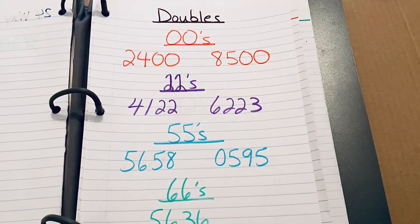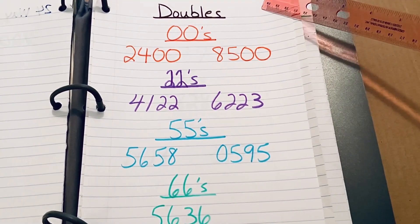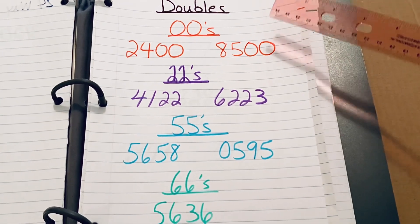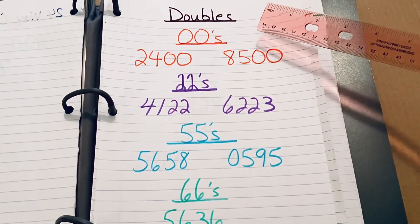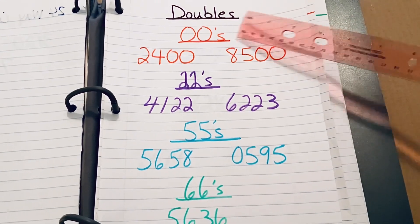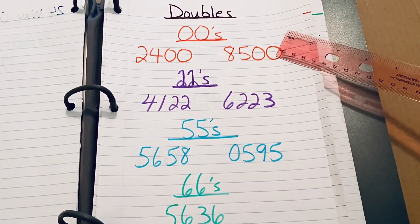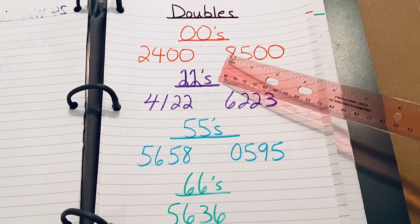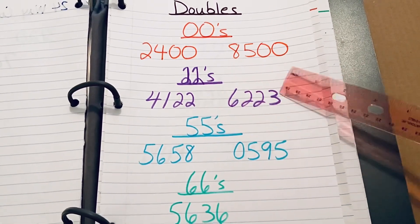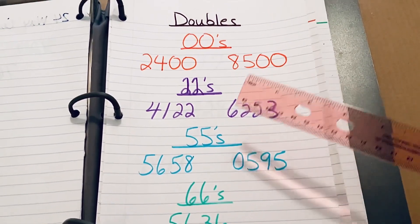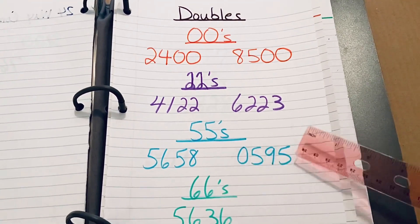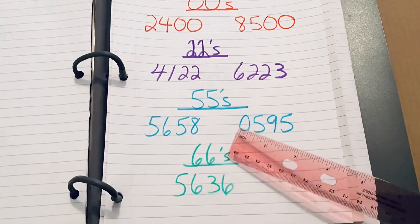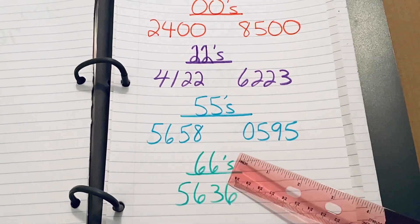And now I'm going to break down the Pick 4 doubles even further. So if you're looking for a particular double number, this is the list for you. Starting with the 00s, 2400 and 8500. The 22s, 4122, 6223. The 55s, 5658, 0595. The 66s, 5636.